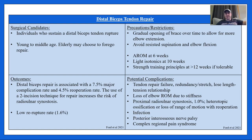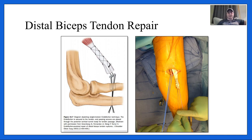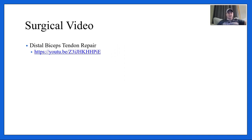Outcomes for distal biceps repair are really good — low re-rupture rate of about one to two percent. Associated with about a 7.5% major complication rate and 4.5% re-operation rate. Use of a two-incision technique increases risk of radio-ulnar synostosis (from Ford et al.). Potential complications include tendon repair failure, redundancy or stretch affecting the length-tension relationship, loss of elbow range of motion due to stiffness, proximal radio-ulnar synostosis, heterotopic ossification, posterior interosseous nerve palsy, and complex regional pain syndrome.